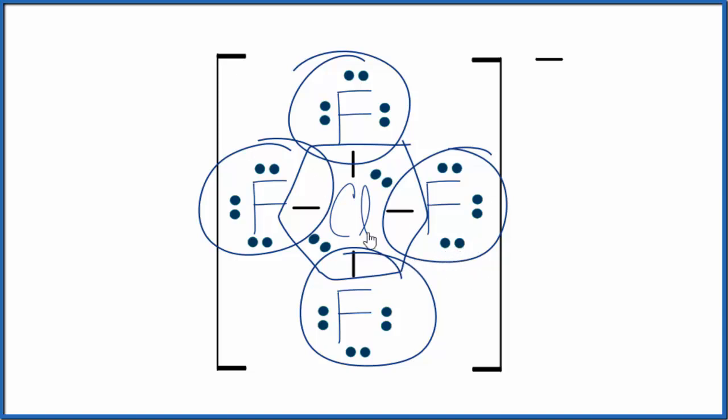As we look at this we can imagine that these four fluorine atoms are pushing away from each other and these lone pairs are pushing away from everything as well. That's what creates the molecular geometry.